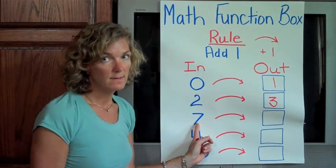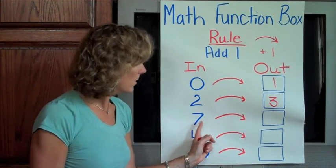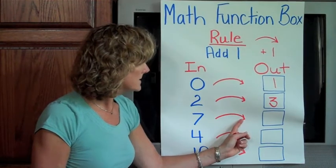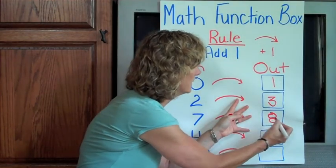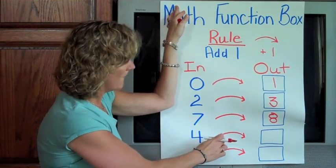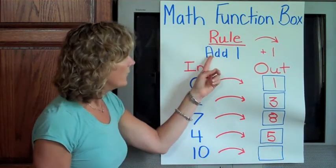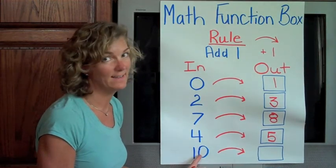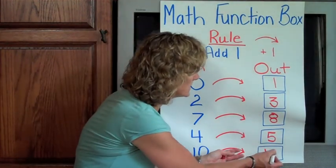If we have 7 in our math function box, 7 is going in, we add 1 because we see the arrow, which is our rule. 7 plus 1 equals 8. Our next one would be 4 plus 1 equals 5. And our final function — our in number is 10. 10 going into our math function box plus 1 equals 11.